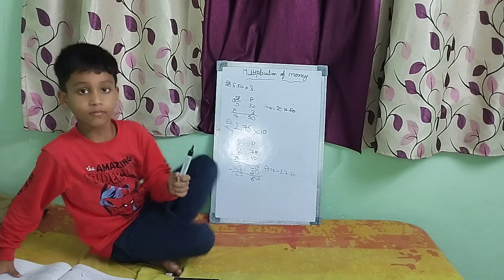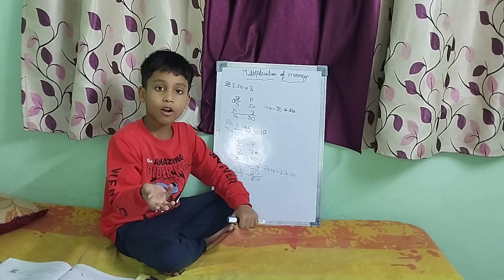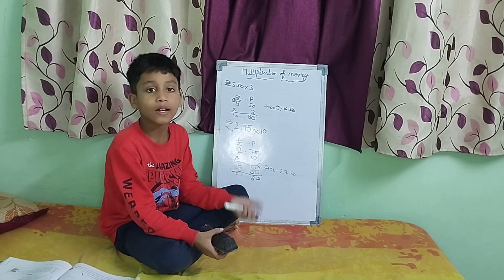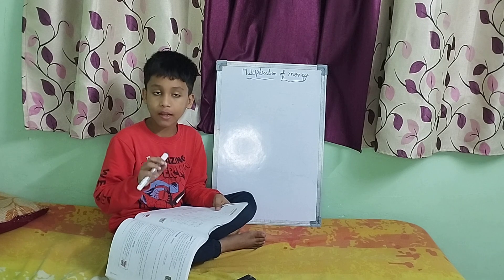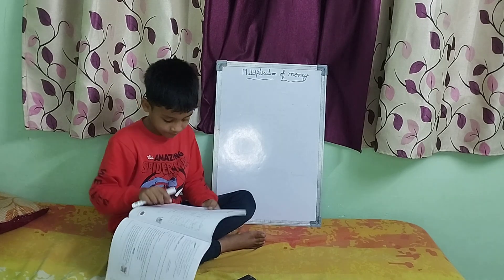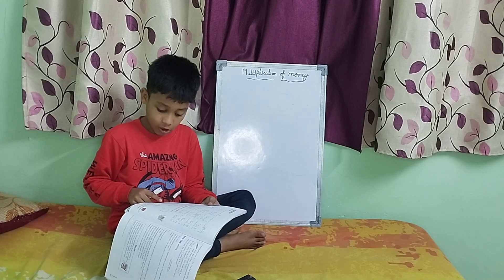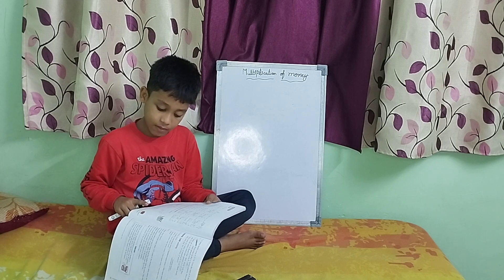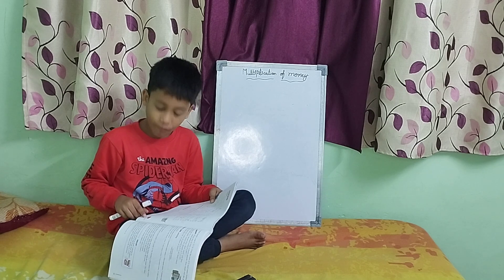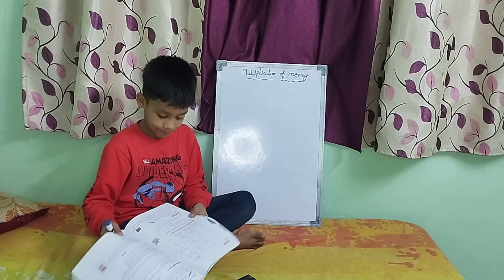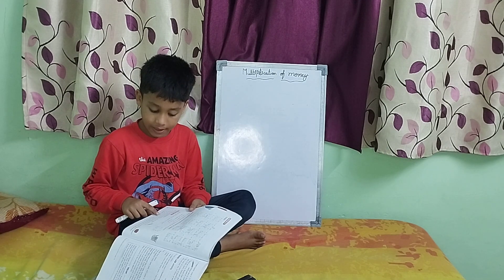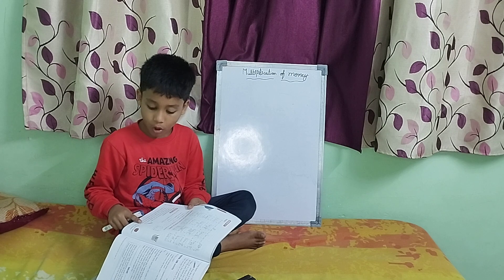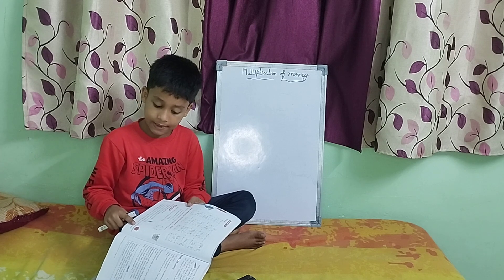Next, did you get the concept? Shall we do another one? Let's do another problem. The cost of 1 kg of apples is Rupees 45. What will be the cost of 3 kg of apples?